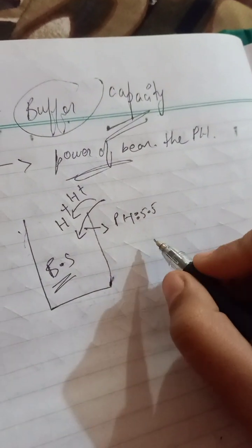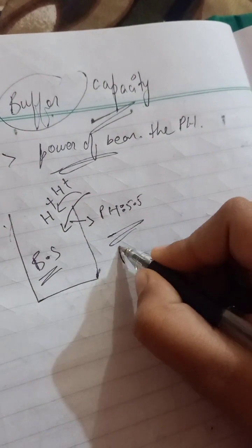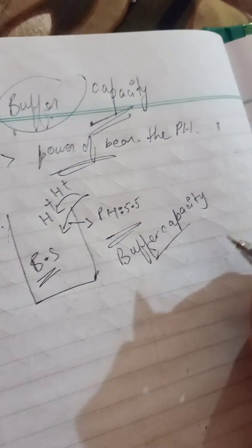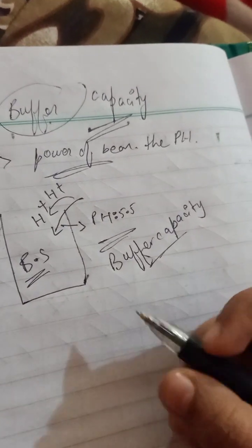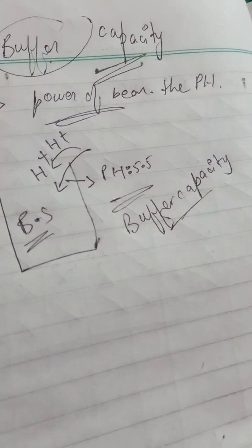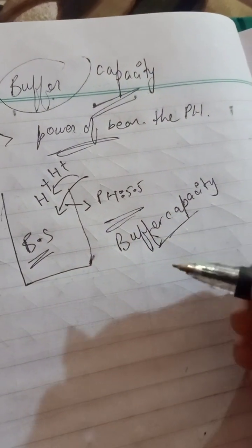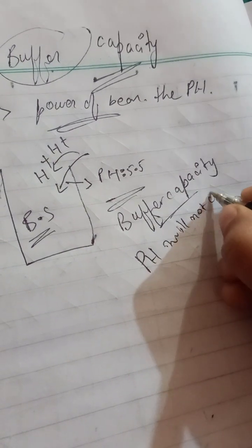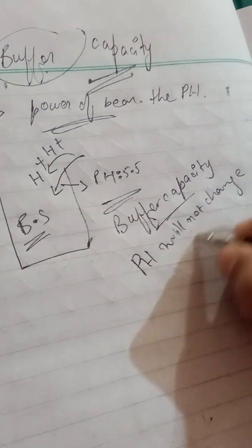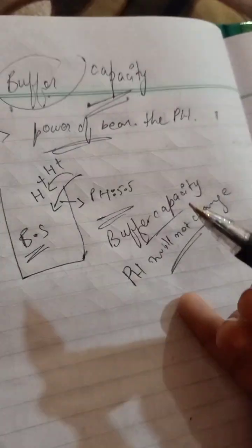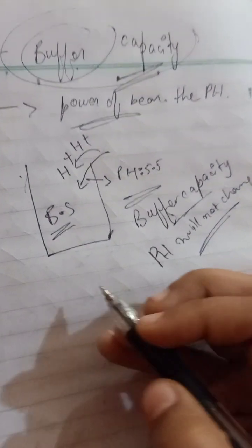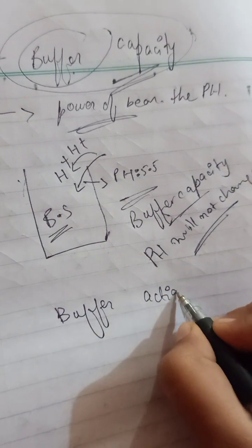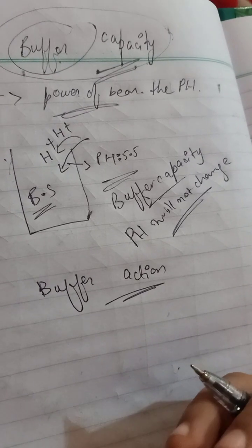This is buffer capacity — the ability to maintain pH even when hydrogen ions or OH⁻ ions are added. Whether you add acid or base, the pH will not change. This bearing or maintaining without change is called buffer capacity. Now another term is buffer action — what is the mechanism behind maintaining pH?